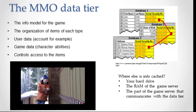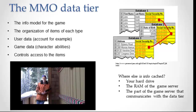And then finally, we have the data layer. We talked before about relational databases, and finally we're at a place where relational databases are really used, because the transactions, believe it or not, aren't of the volume and aren't of the speed that require them to go outside of a relational database. So that data tier consists of a relational database running on lots and lots of servers that contain your data.